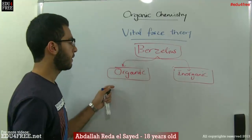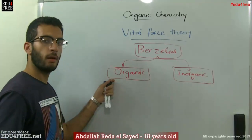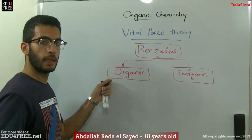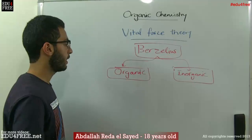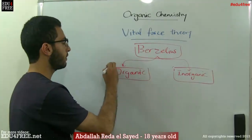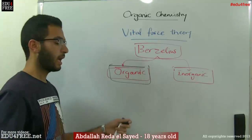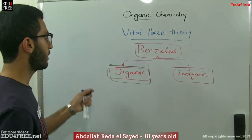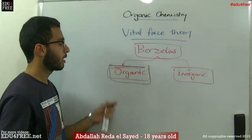The problem with Berzelius is that he supposed these organic compounds cannot be prepared in laboratories or artificially. They can only be obtained through the extraction process from an organic source — he believed you cannot prepare an organic compound otherwise.